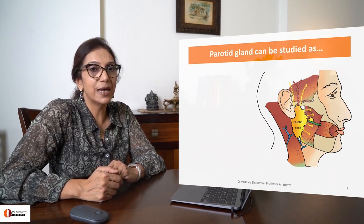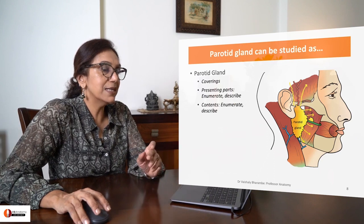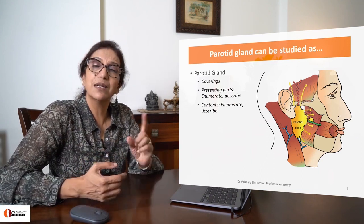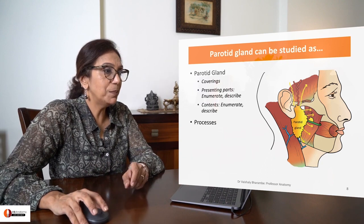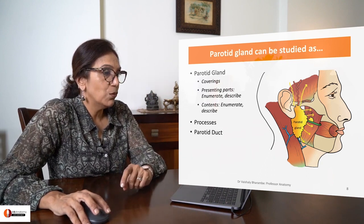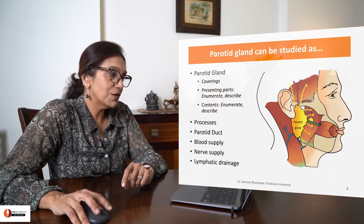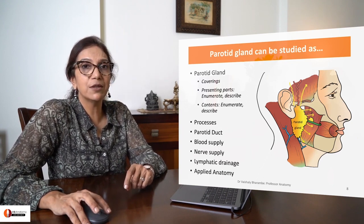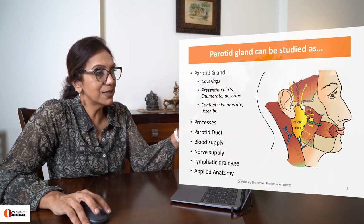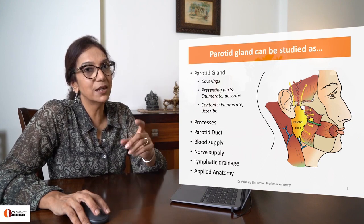We are going to study the parotid gland covering its coverings, parts, and contents, then the parotid processes, the parotid duct, blood supply, nerve supply, lymphatic drainage, and applied anatomy. This is what gets covered under parotid gland. If you take a screenshot of this, it will help you in revising the topic later.